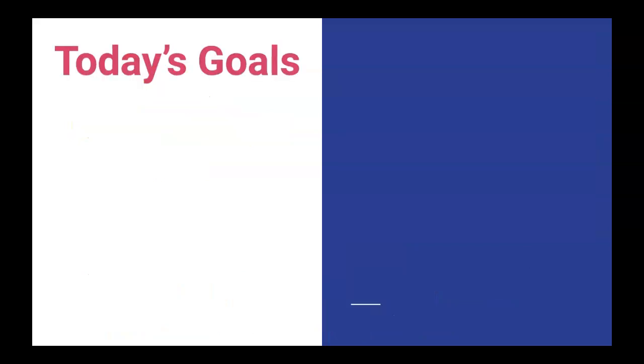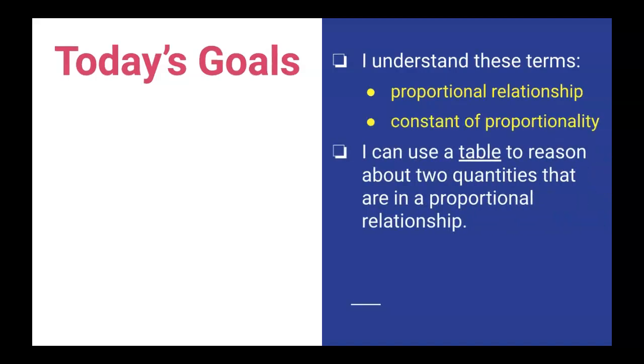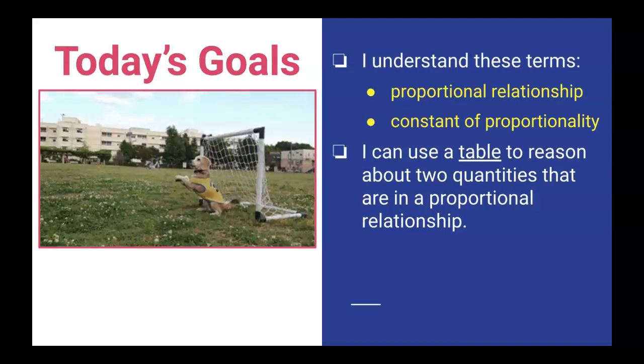So, again, today's goals, straightforward but really big in this unit. I understand these terms: proportional relationship, constant of proportionality, and I can use a table to reason about two quantities that are in a proportional relationship. Hopefully, you get the goal and that dog doesn't block you. Thank you.